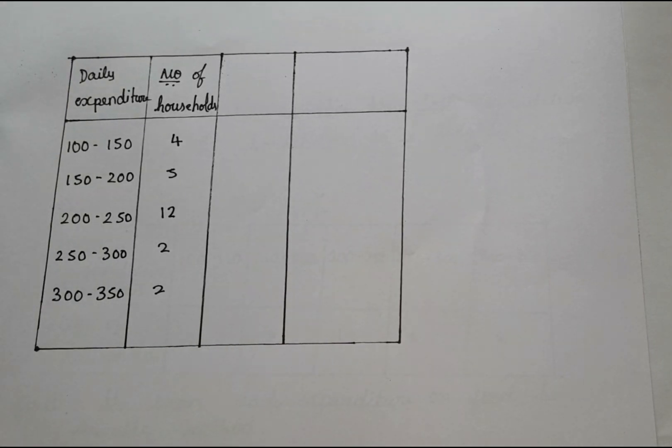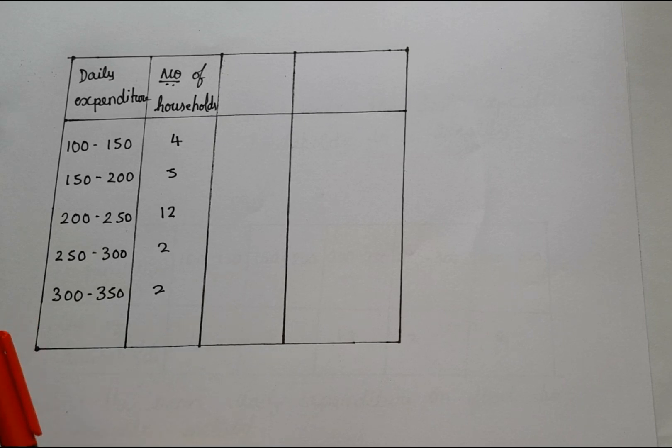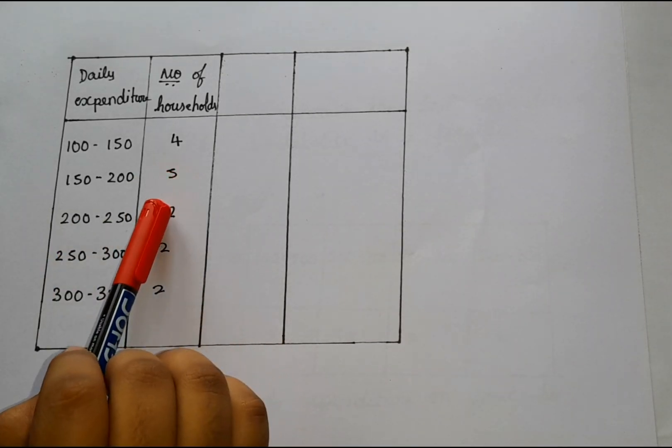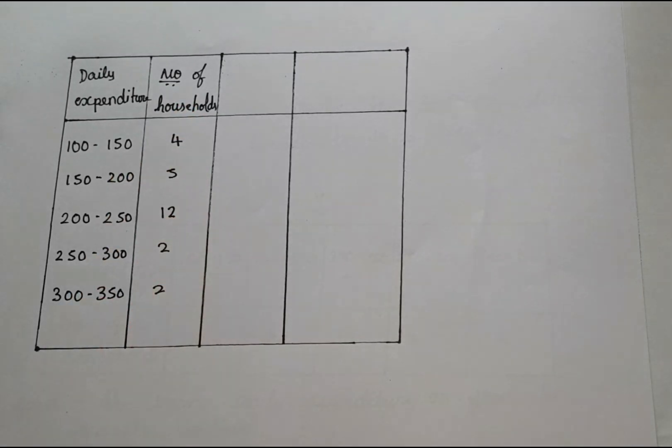So I just drew the table here. And here when you just check it out, I just wrote it as it is. Otherwise, you can just take it as class mark and this one you can just take it as Fi, that is frequency. So these are all frequency.